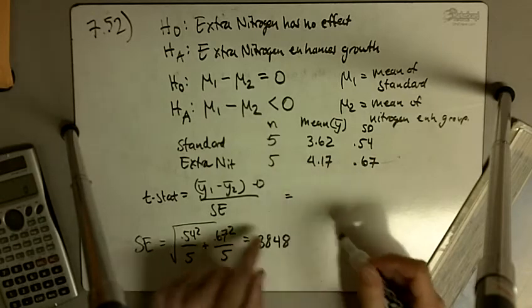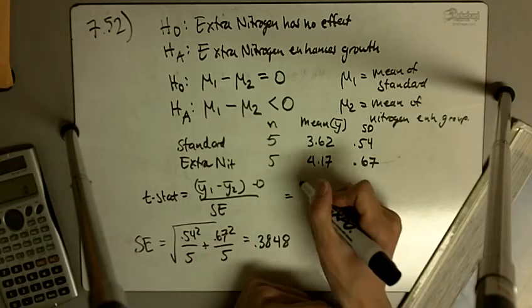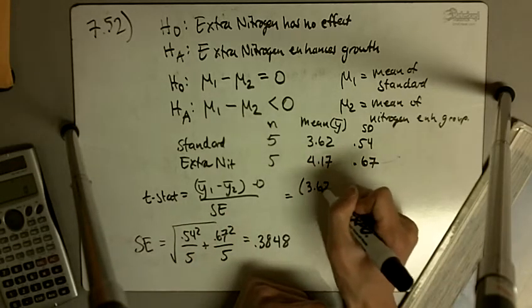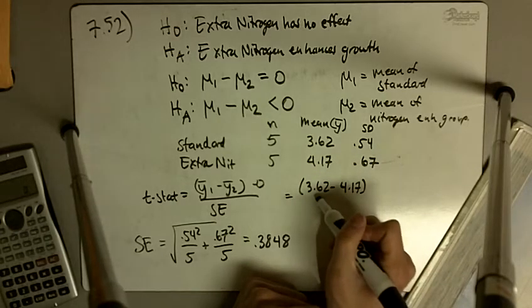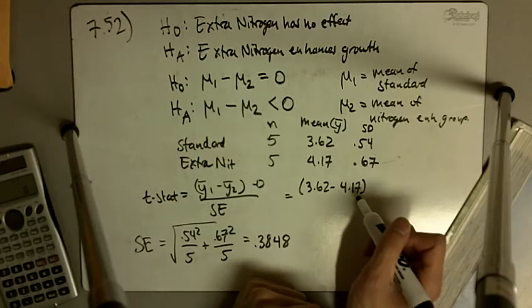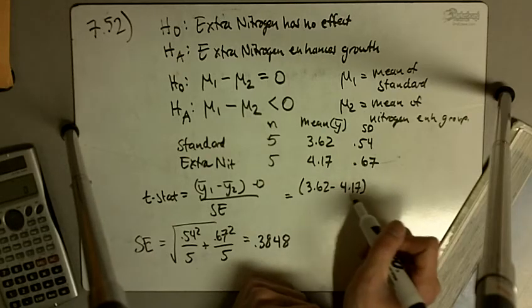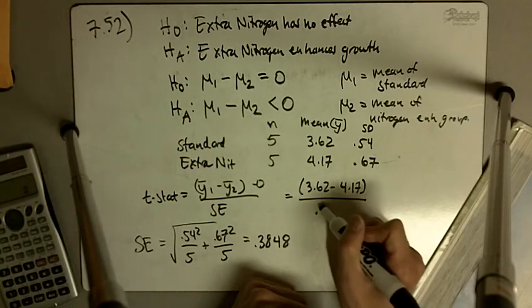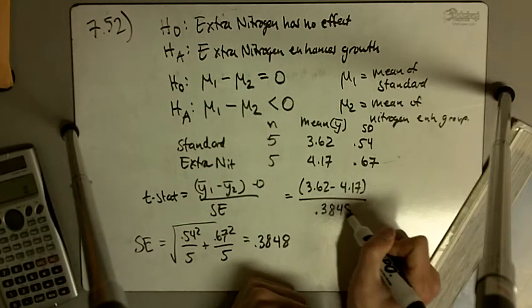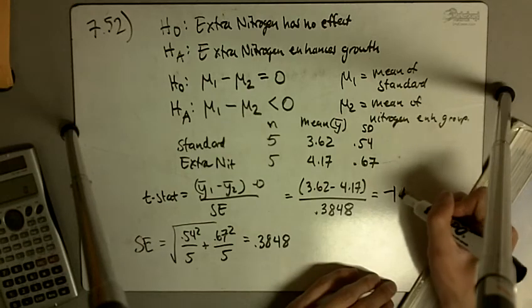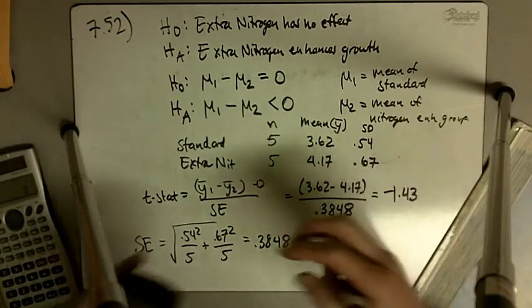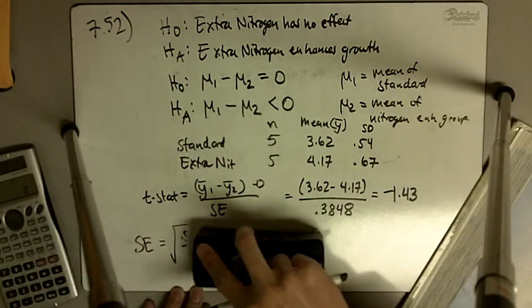So our t-statistic on top, we have 3.62 minus 4.17, this is the mean of the standard group minus the mean of the enhanced group, or the sample means, divided by our standard error. When we do that, we get negative 1.43, so our t-statistic is negative 1.43.